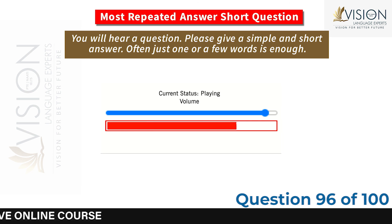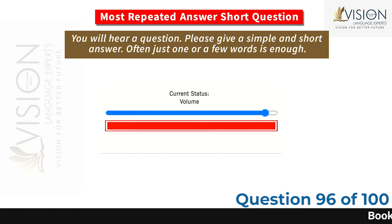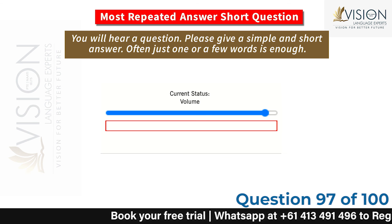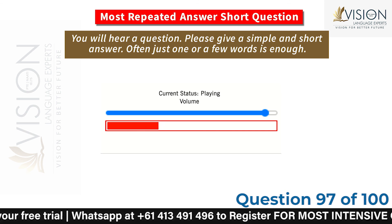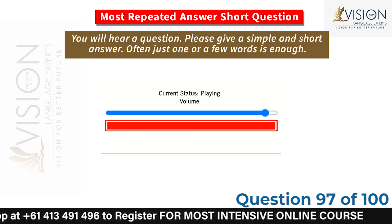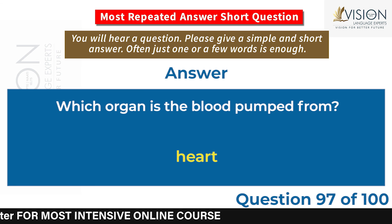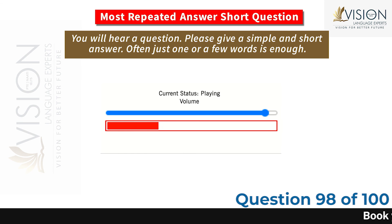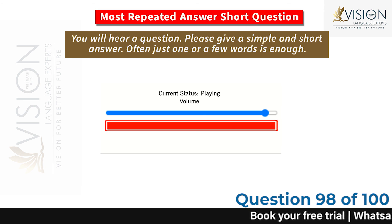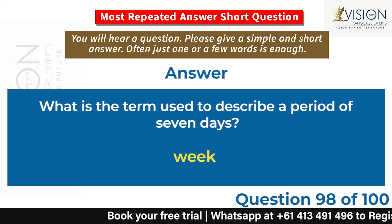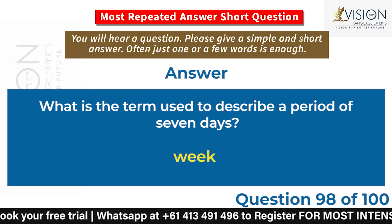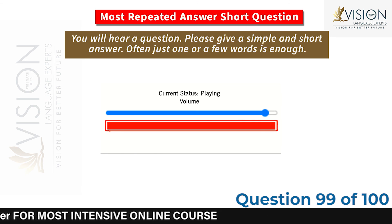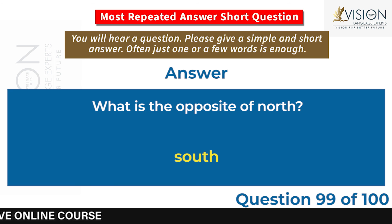How many years are there in a century? 100. Which organ is the blood pumped from? Heart. What is the term used to describe a period of seven days? Week. What is the opposite of North? South.